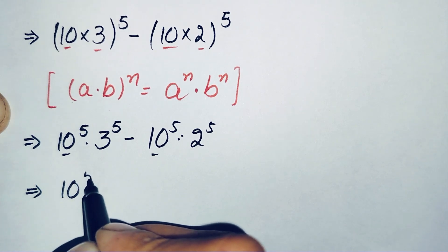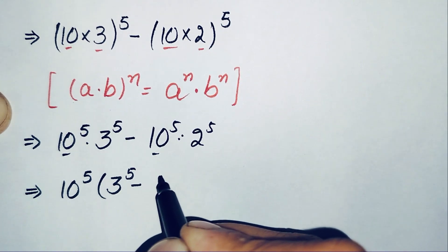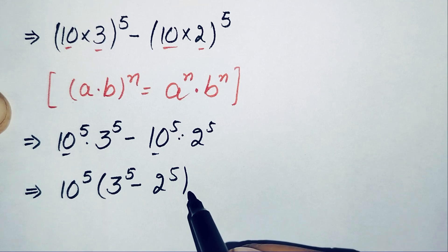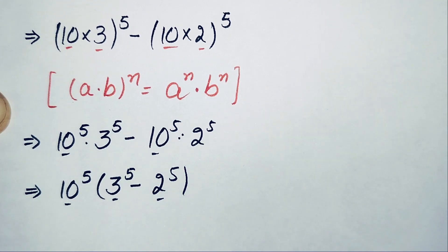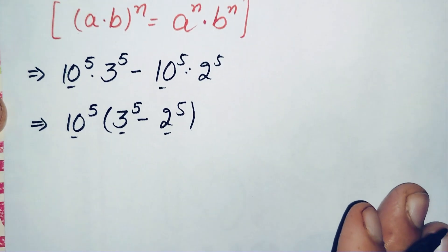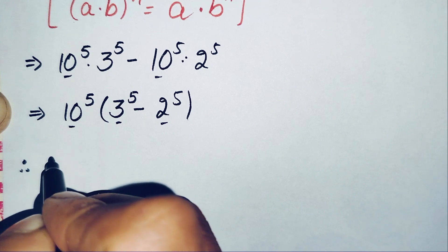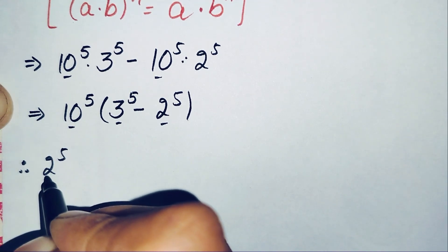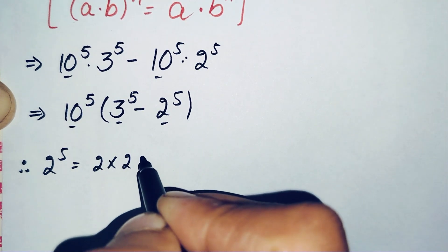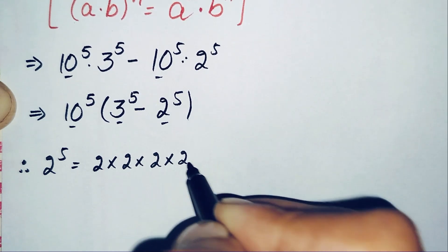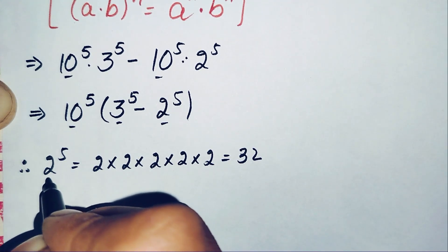Taking 10 raised to power 5 as common, we are left with 3 raised to power 5 minus 2 raised to power 5 inside the brackets. We will now find the values one by one. First, 2 raised to power 5: multiplying 2 five times — 2 times 2 is 4, times 2 is 8, times 2 is 16, times 2 is 32. So 2 raised to power 5 equals 32.